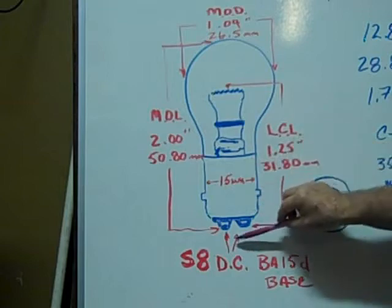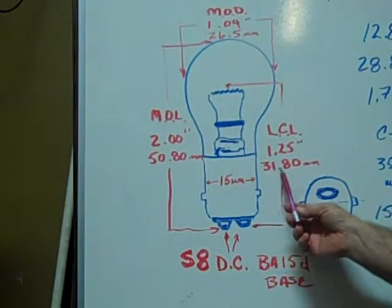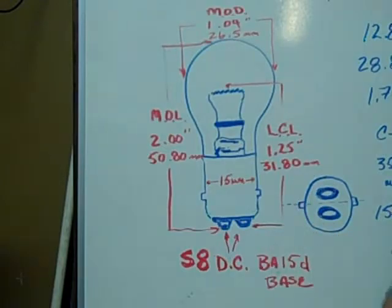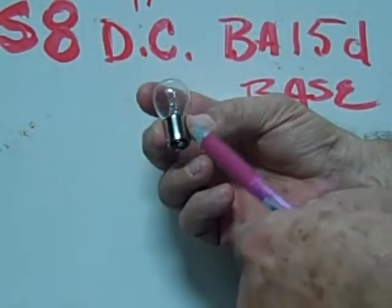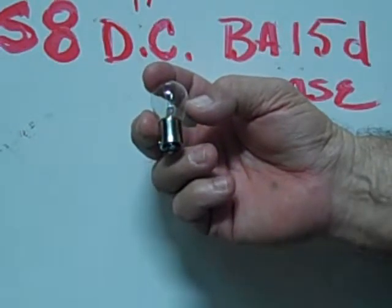The light centered length is 1.25 inches or 31.80 millimeters. This is an example of a number 1142 BA-15D base miniature bulb.